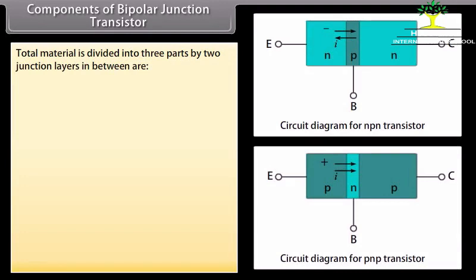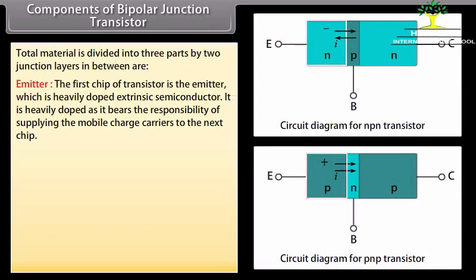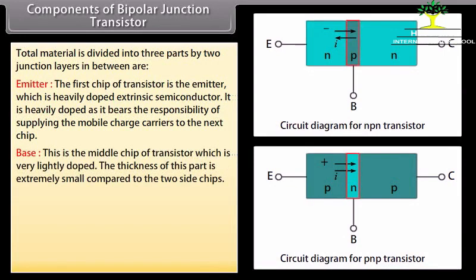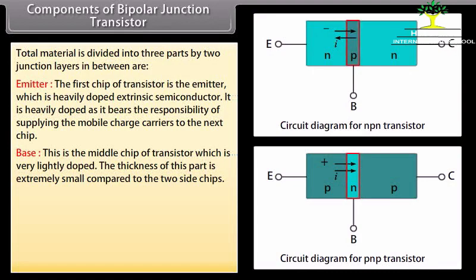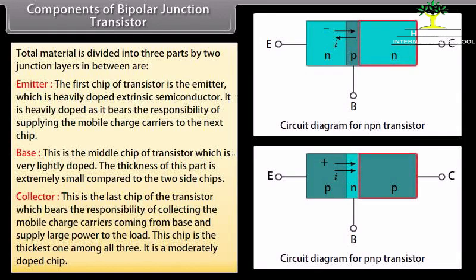Components of a bipolar junction transistor: The material is divided into three parts. The emitter is the first chip, heavily doped to supply mobile charge carriers. The base is the middle chip, very lightly doped and extremely thin. The collector is the last chip, moderately doped and the thickest, responsible for collecting mobile charge carriers from the base and supplying large power to the load.